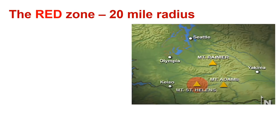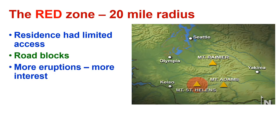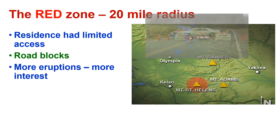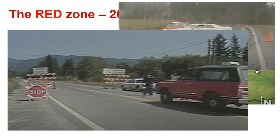The Red Zone. There was a 20-mile radius around Mount St. Helens known as the Red Zone. Residents had limited access to this area. They had roadblocks in place because more eruptions meant more interest and more and more people wanted to see what was happening. Here is one roadblock that they had, and another.